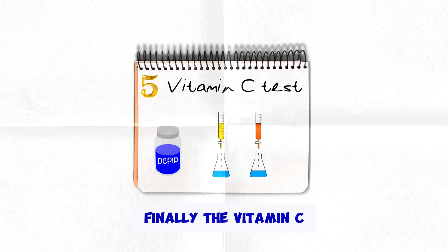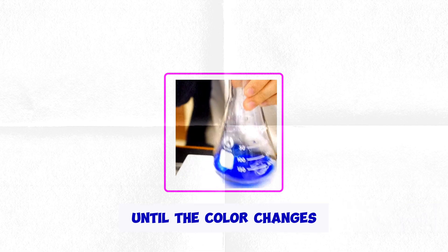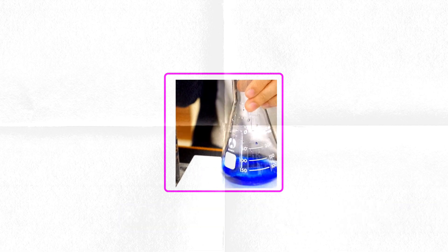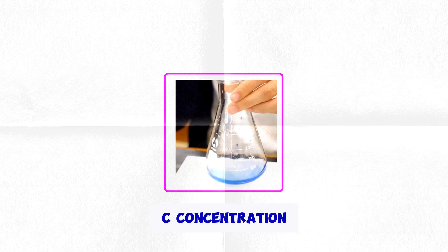Finally, the Vitamin C test. Add the juice to the DCPIP solution while swirling the flask until the colour changes from blue to colourless. The less the volume of juice required, the higher its Vitamin C concentration.